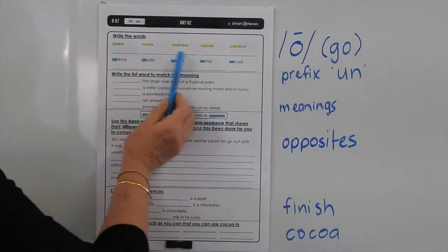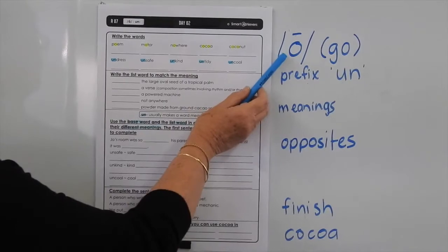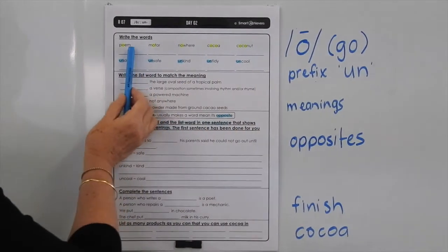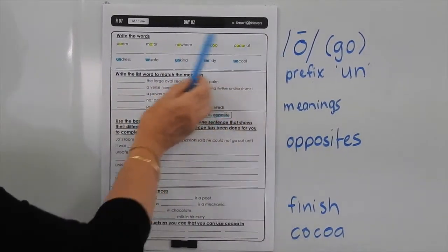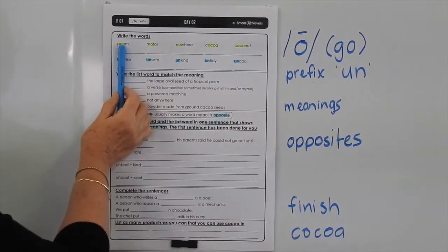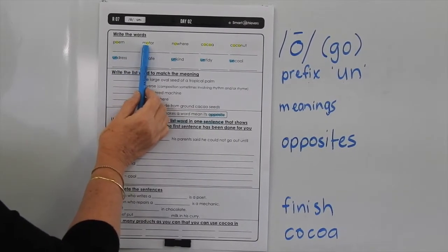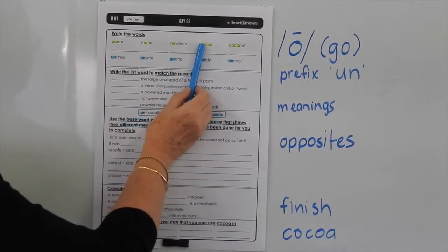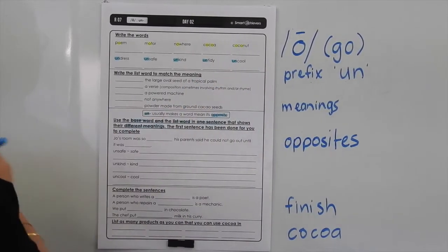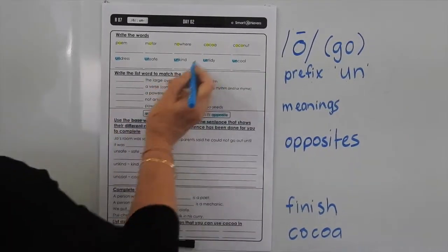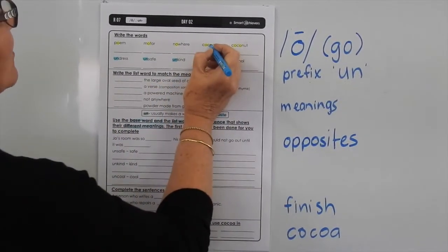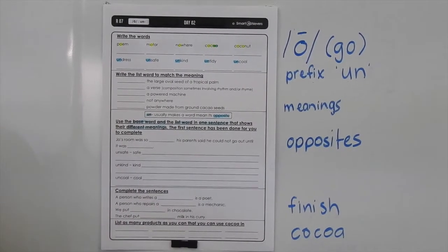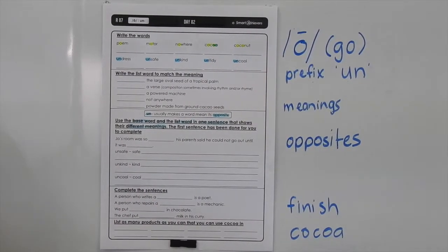Our words today are covering the long O sound as in go and we're just using the letter O for that. So we've got poem, motor, nowhere, cocoa and coconut. In cocoa you've also got the OA representation for the long O sound too.